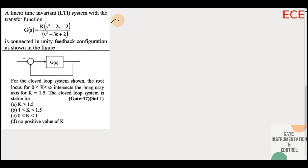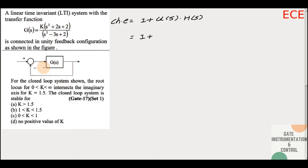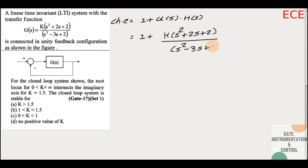Our characteristic equation here is: 1 + G(s)·H(s) = 0. H(s) is unity feedback, so H(s) = 1. Therefore: k(s² + 2s + 2) / (s² - 3s + 2) + 1 = 0, which gives s² - 3s + 2 + k(s² + 2s + 2) = 0.